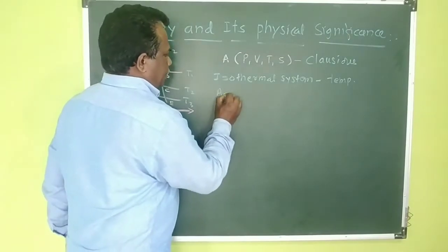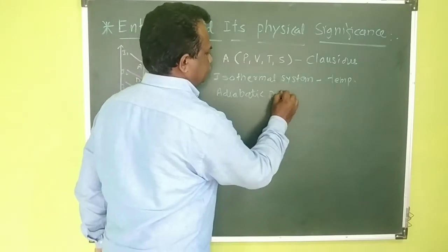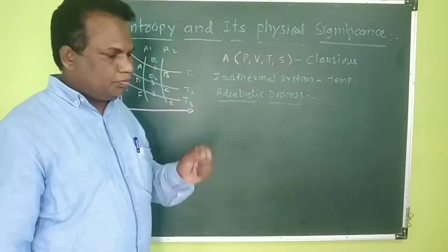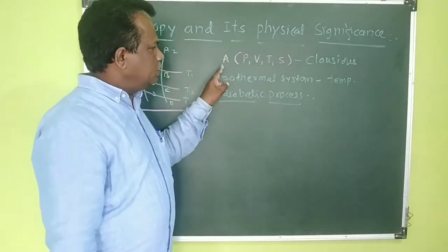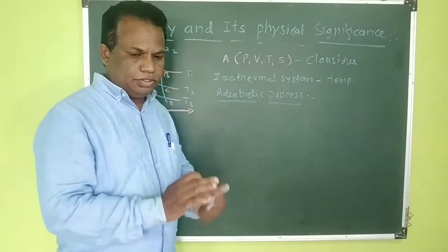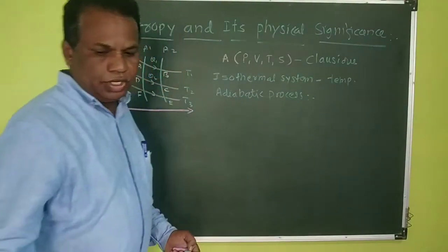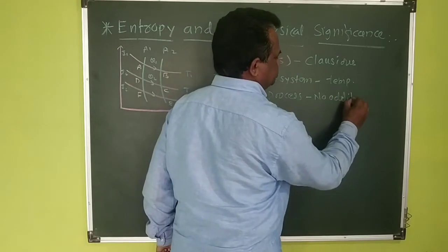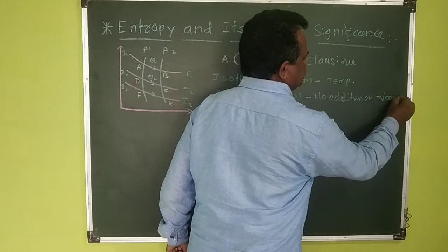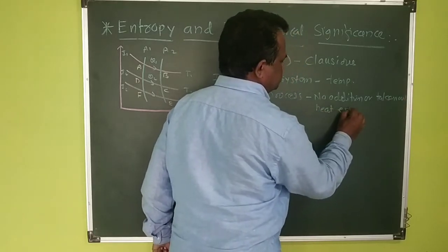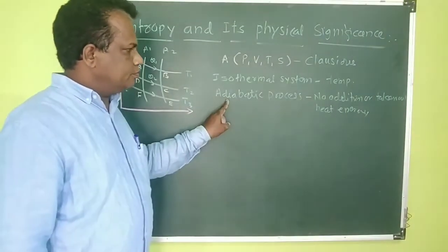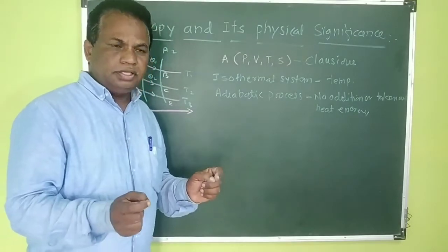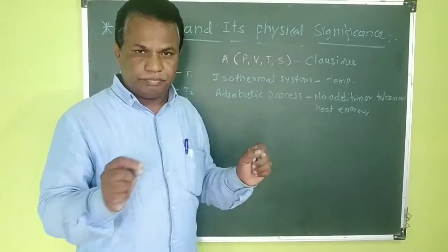Now consider the adiabatic process. An adiabatic process is a thermodynamic process where one state changes to another, but during that process you cannot add energy or take out energy. So in an adiabatic process, no heat energy is added to the system and no heat energy is taken from the system. Both temperature and heat energy may change.